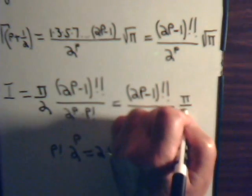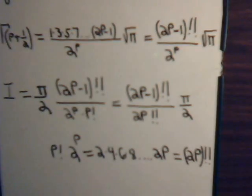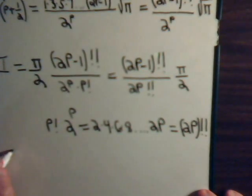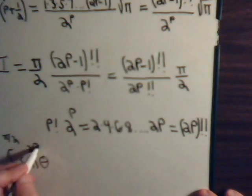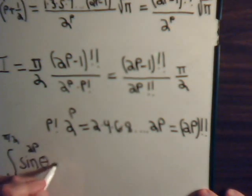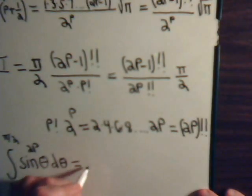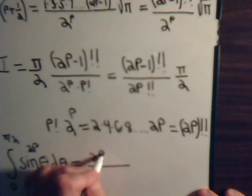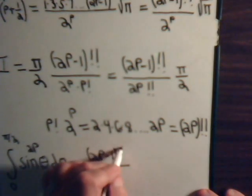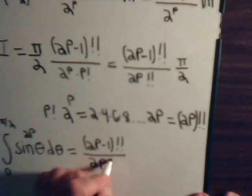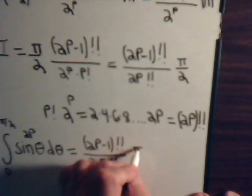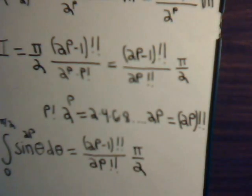So finally we have: the integral from 0 to pi over 2 of sine of theta to the 2p d-theta equals (2p−1)!! divided by (2p)!!, all times pi over 2. And that's our answer.